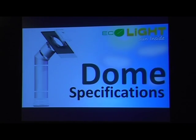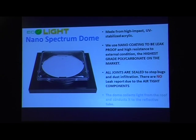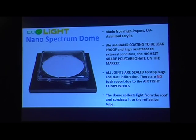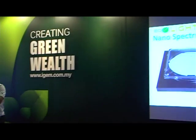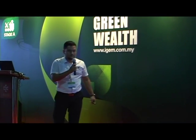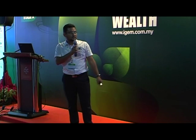Specs: there are three parts. First, the dome — we call it the nano-spectrum dome. Made from high-impact UV-stabilized acrylic with a nano-coating to be leak-proof and highly resistant to external conditions. The highest-grade polycarbonate on the market; all joints are sealed with magnet-type parts. The dome collects light from the roof and conducts it into the reflective tube.